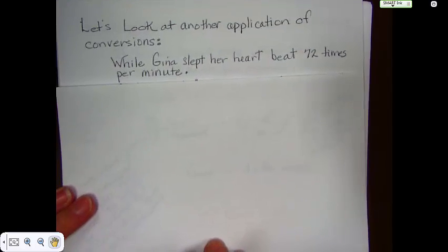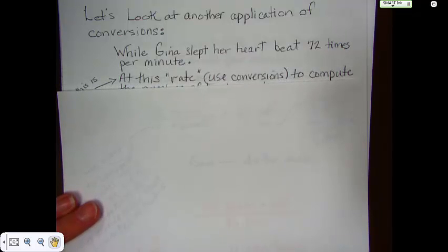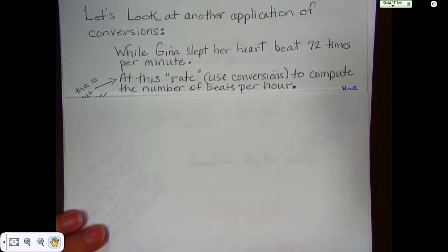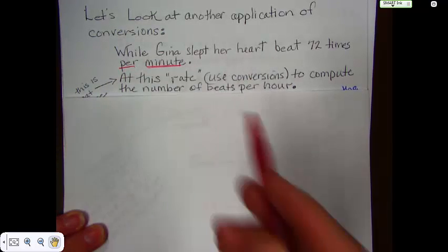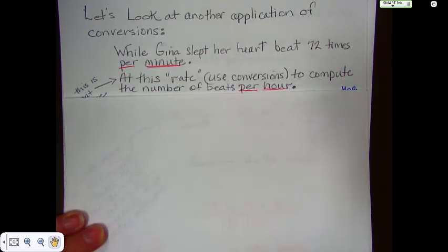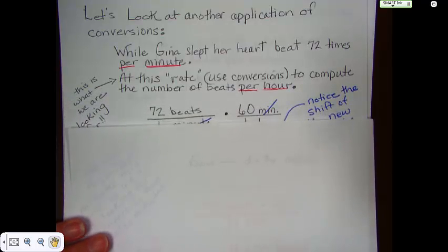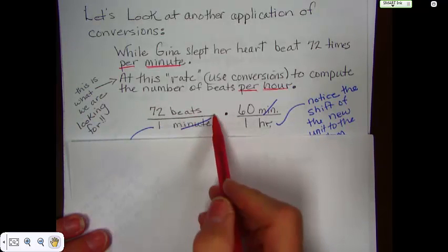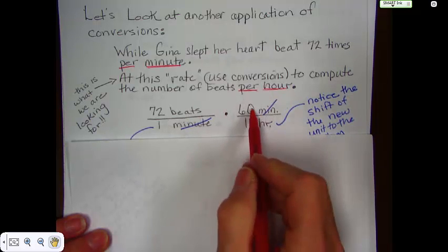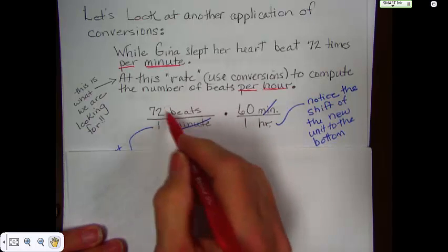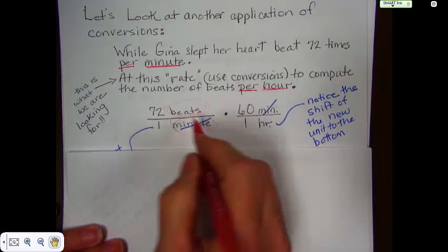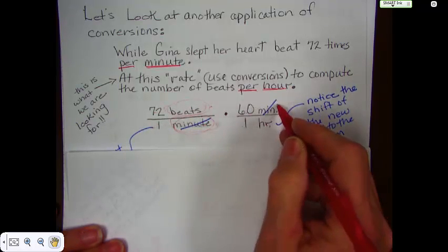Okay. We'll look at another one. While Gina slept, her heart beat 72 beats per minute. At this rate, using conversions, compute the number of beats per hour. Now, we know she beat 72 per minute. Now, we want to know what it is per hour. Now, if you think about it for a second, you should be getting a bigger answer. Because we're going for a longer period of time. So, if we set it up, 72 beats per 1 minute times 60 minutes in 1 hour. Ooh, there was a shift. Okay. Now, we're no longer worried about eliminating the beats. We're worried about eliminating the minutes. So, now we have 72 beats per 1 minute, 60 minutes per 1 hour.